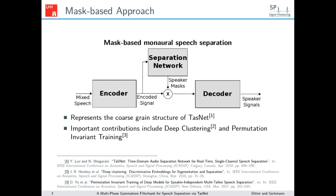A common approach to the speech separation problem is the mask-based approach. It is used by systems like deep clustering, permutation invariant training, and also by TASNET, which is at the core of this research work. In the mask-based approach we start out with the mixed speech signal as recorded by the microphone. This mixture signal is fed into an encoder — for deep clustering and permutation invariant training this would often be a short-time Fourier transform, while for TASNET this would be a real-valued filter bank. The encoder then gives us the encoded mixture signal, which we feed into a separation network.